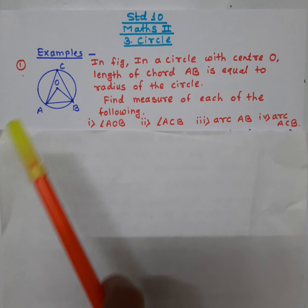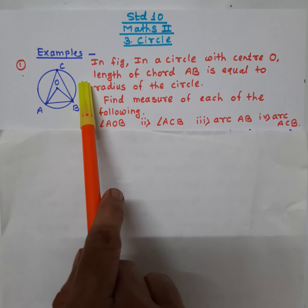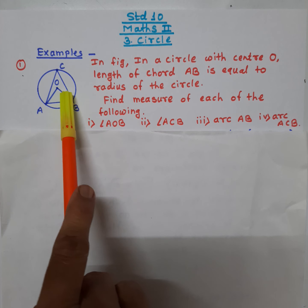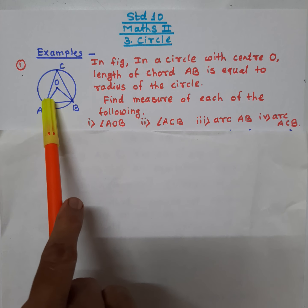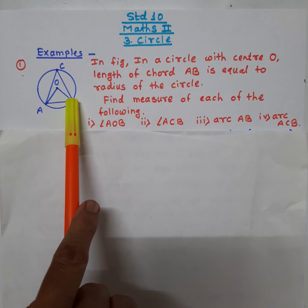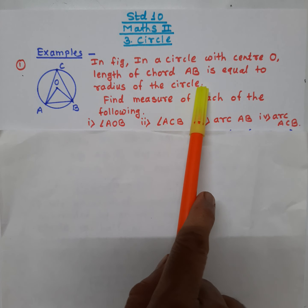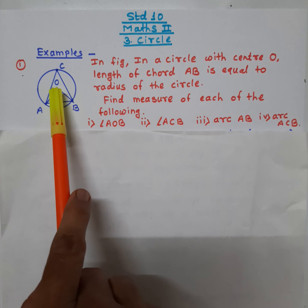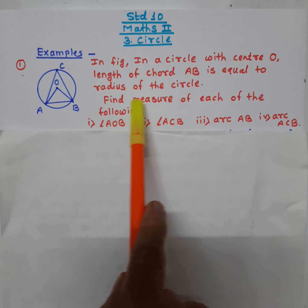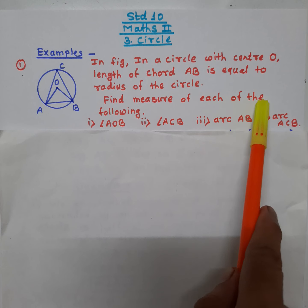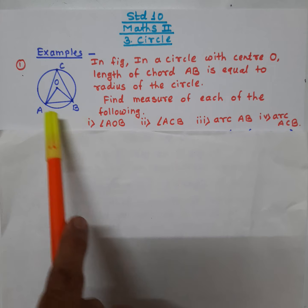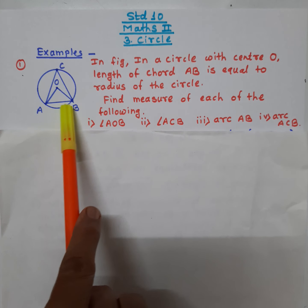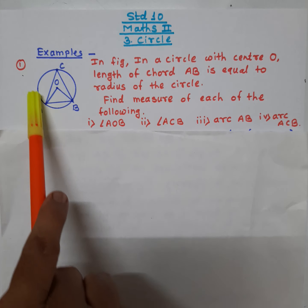The first example is: observe the figure. In this figure, O is the center of a circle and the length of chord AB is equal to the radius of the circle. The radii of the circle are OA and OB. Find the measure of each of the following: angle AOB, angle ACB, arc AB, and arc ACB.